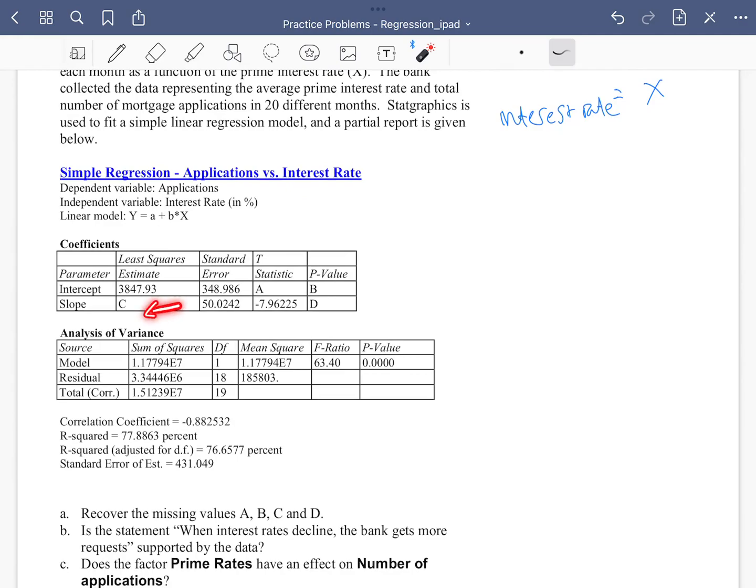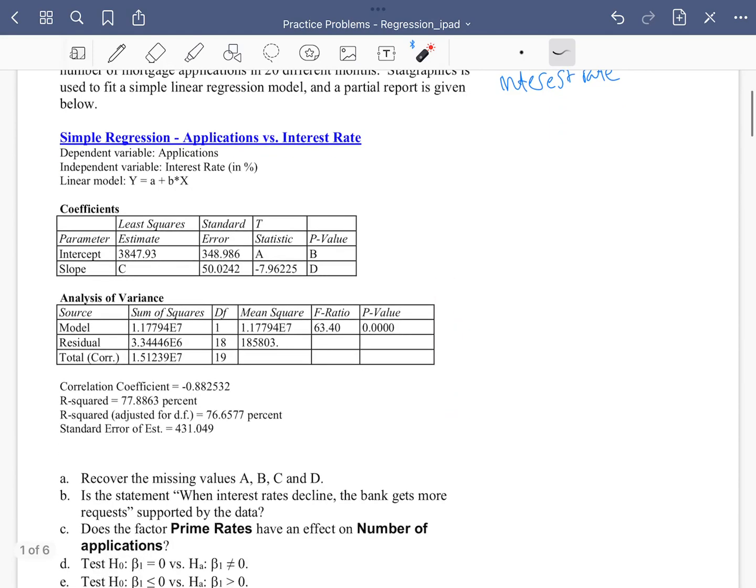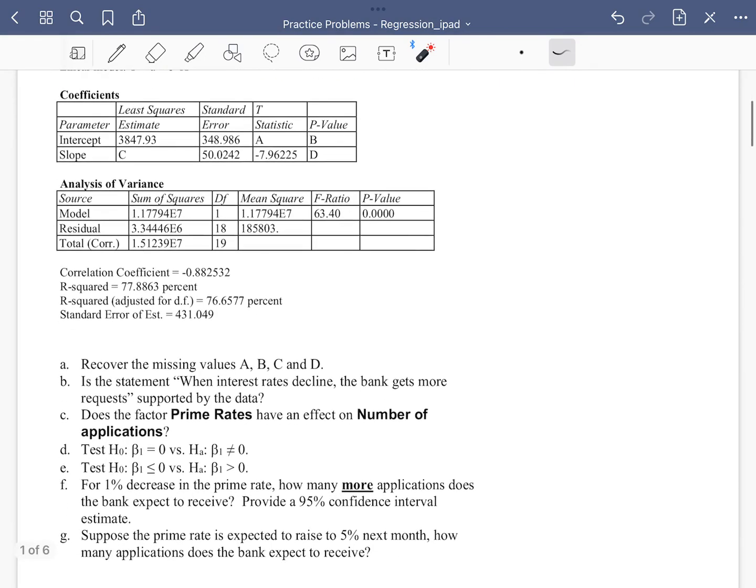We see there's a slope estimate and there's an intercept estimate. There's an ANOVA table and a bunch of other goodness of fit estimates. So part A, we were asked to recover the missing values of A, B, C, D.